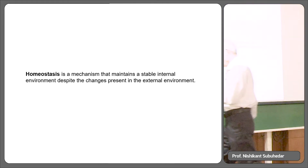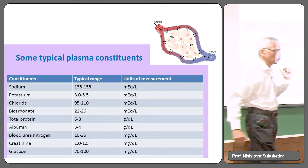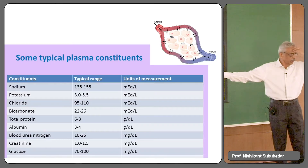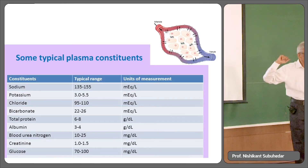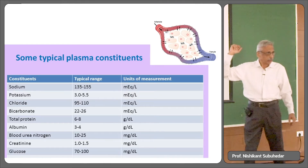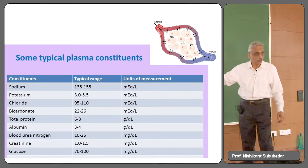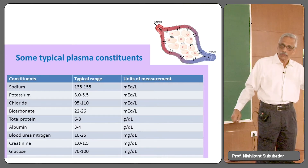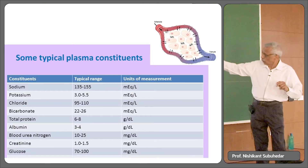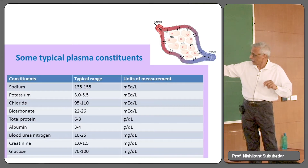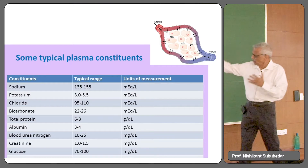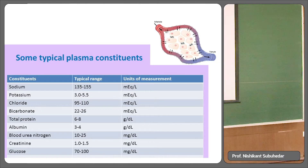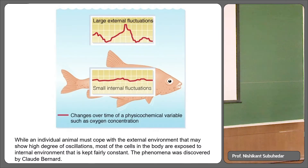Looking at this table, it's not only glucose that must be regulated. Sodium in the blood must stay 135–155 millimoles per liter — if it falls you will faint. Potassium is between a very narrow range of 3–5.5, chloride 95–100, bicarbonate, total plasma albumin — look at these ranges. Almost every parameter of your blood has to be within a narrow, narrow limit.